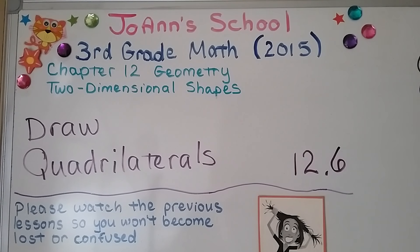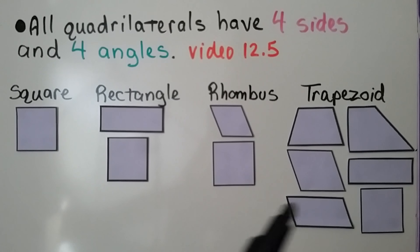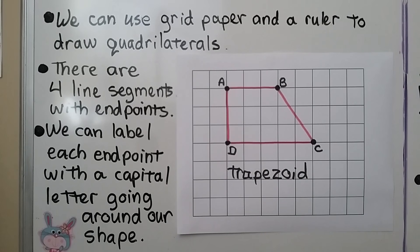Lesson 12.6: Draw Quadrilaterals. All quadrilaterals have four sides and four angles, as we learned in lesson 12.5. We have a square, a rectangle, a rhombus, and trapezoids, and there are some quadrilaterals that don't fit those descriptions. In 12.5 we learned to classify quadrilaterals by the number of pairs of opposite parallel sides, by the number of pairs of sides of equal length, and by the number of right angles. We can use grid paper and a ruler to draw quadrilaterals.